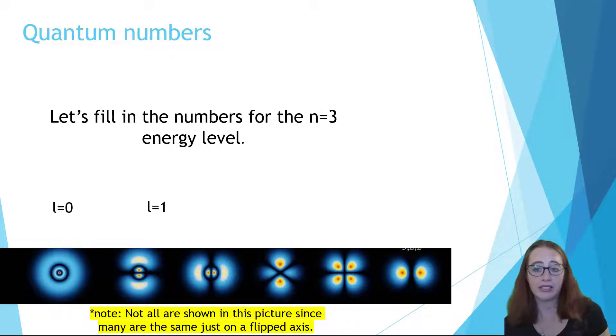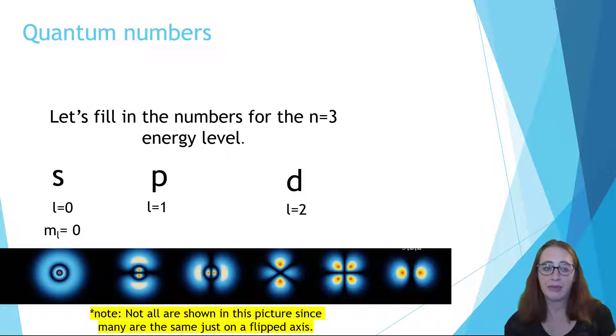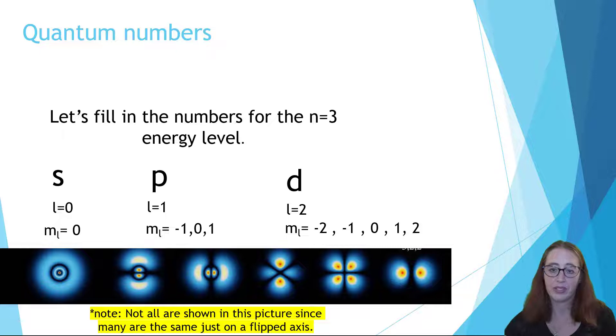For each l level, there are possible m sub l numbers. For l equals zero, or the s orbital, m sub l equals zero. For the l equals one level, or the p orbital, m sub l equals negative one, zero, and one. And for the d orbital, m sub l equals negative two, negative one, zero, one, and two.